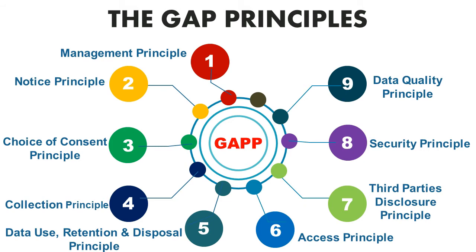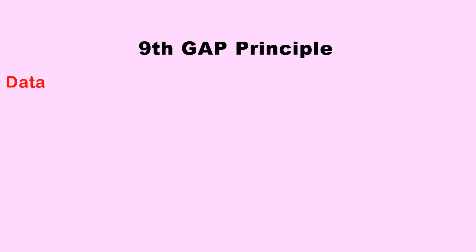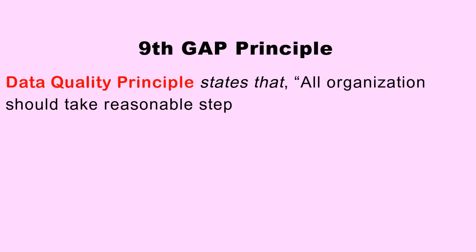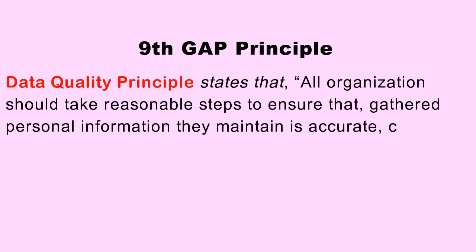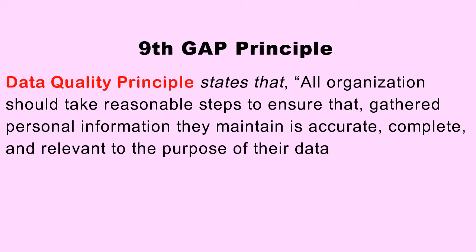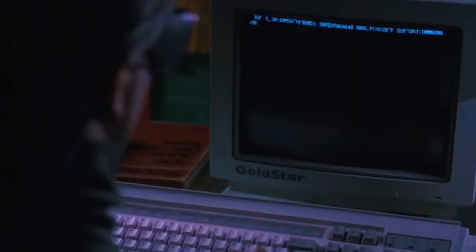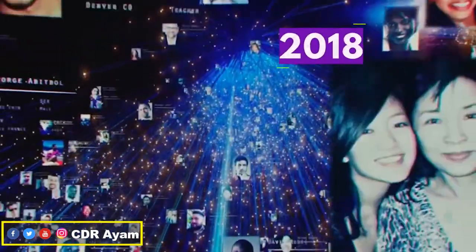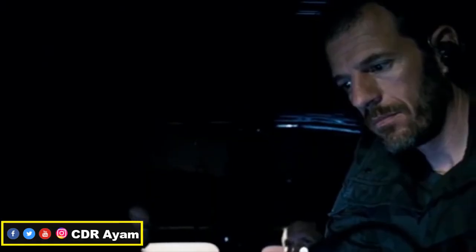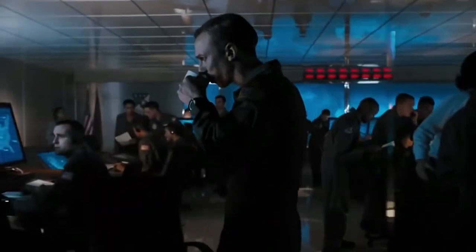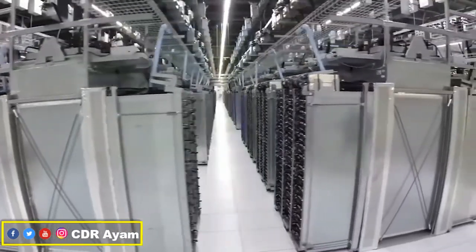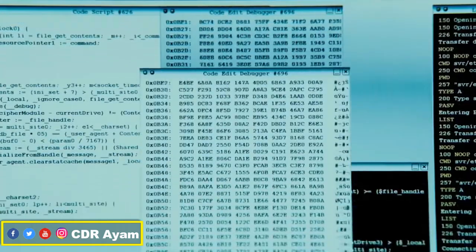The ninth GAPP principle is the Data Quality principle, which states that all organizations should take reasonable steps to ensure that all guarded digital information they maintain is accurate, complete, and relevant to the purpose of gathering. Organizations gathering personal information cannot be held accountable for inaccurate data if the information provider deliberately provides inaccurate information. It is based on this principle that some organizations and government agencies sue people who provide inaccurate personal information.